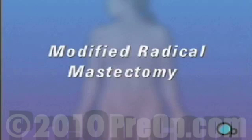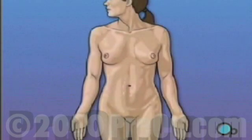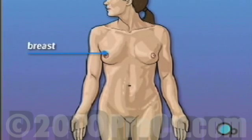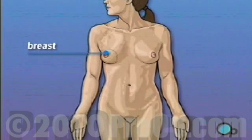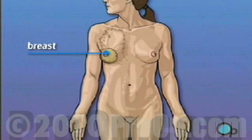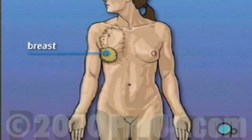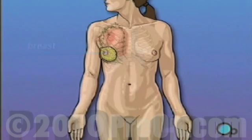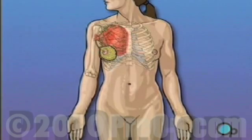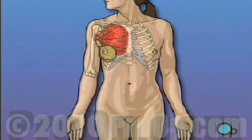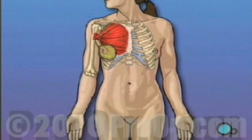Your doctor has recommended that you have a modified radical mastectomy, but what does that actually mean? Traditionally, a radical mastectomy called for the removal of the breast, surrounding tissue, and even the chest muscle below. A modified radical mastectomy is a procedure in which the breast and surrounding tissue are removed while leaving the chest muscle intact.